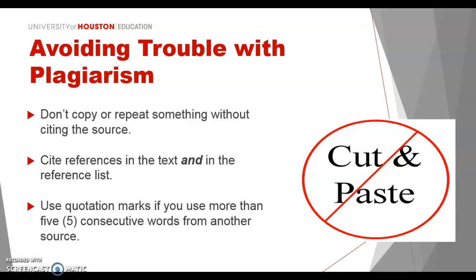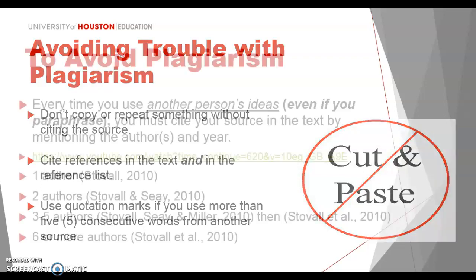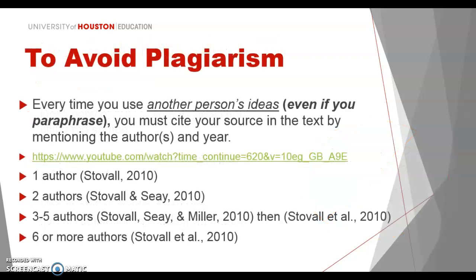If you cite a reference in your text, you have to cite it in your reference list and vice versa. And of course, if you're using a direct quote — basically roughly five or more consecutive words from another source — you're going to want to put quotation marks around that and cite it. Every time you use another person's ideas, even if you're paraphrasing, you have to cite your source in the text by mentioning the author and the year.